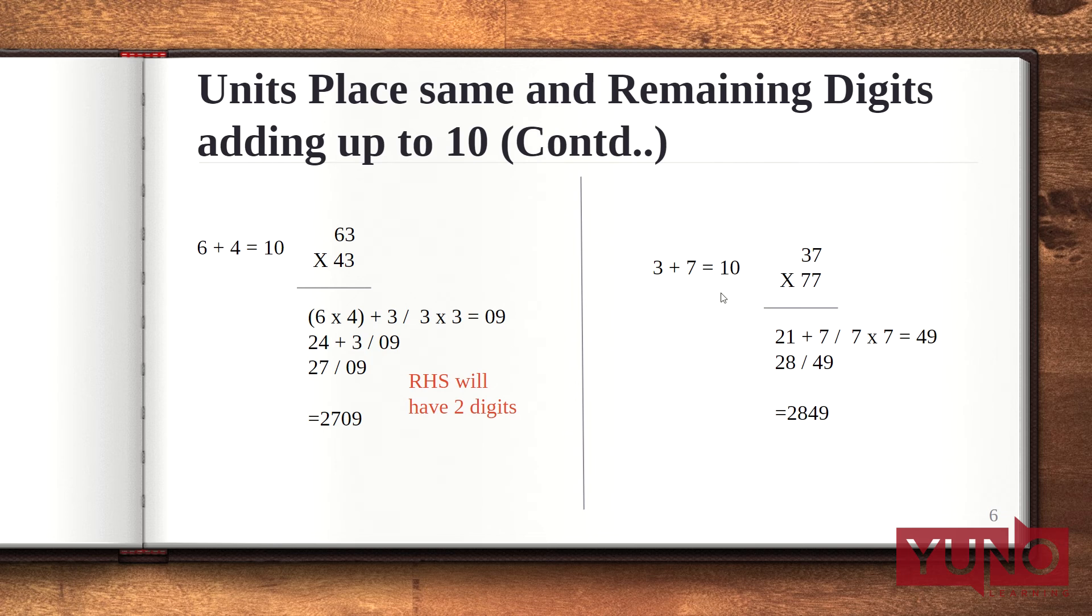Similarly let's take an example 37 multiplied with 77. Now here also the rightmost digits are same, that is 7 into 7, 49, and the leftmost digits that is 3 and 7 form the sum as 10. Now the first step here is multiply 7 into 7, that is 49, and form the answer from the left side.